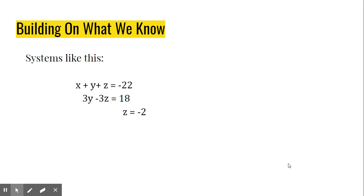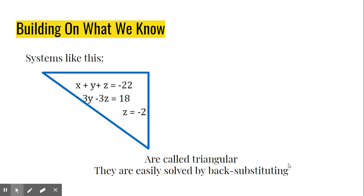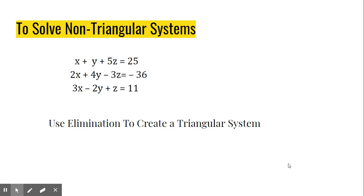As you may recall, systems like this are triangular, and they are easy to solve by back-substituting. But what about systems that are not triangular? Systems like this. Most of the systems of equations that you deal with in this unit are going to be similar to this. What do you do then? We're going to use the elimination method to create a triangular system, because we know how to solve a triangular system.